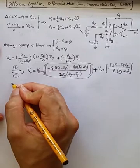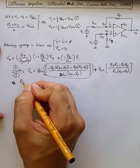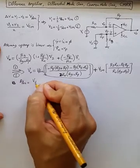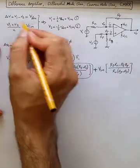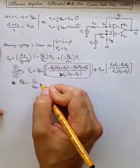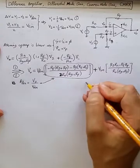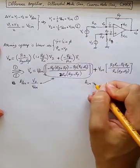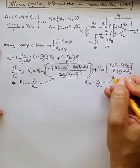If we define ADM as Vout over Vdm, which is the differential voltage between these two, then we get this value here. And if we define ACM as Vout over Vcm, then the value is this.